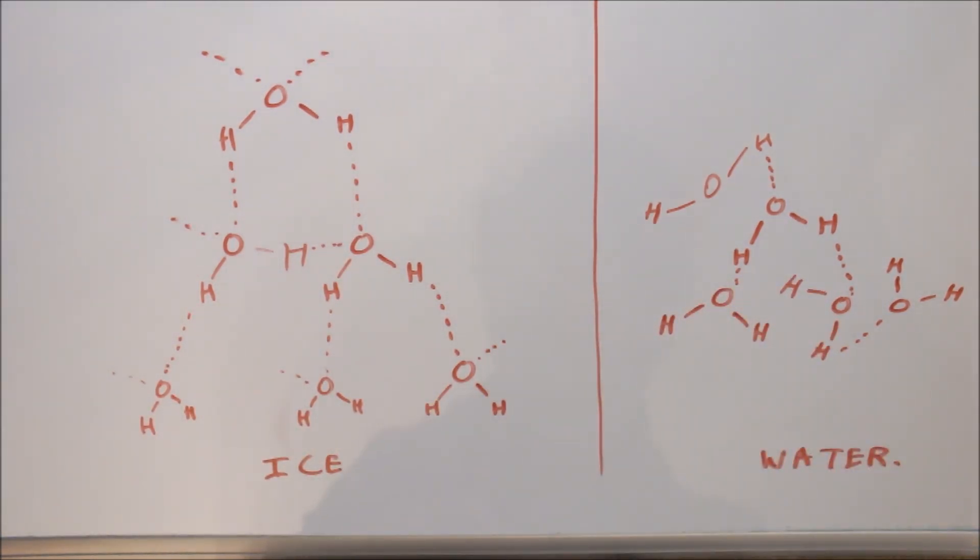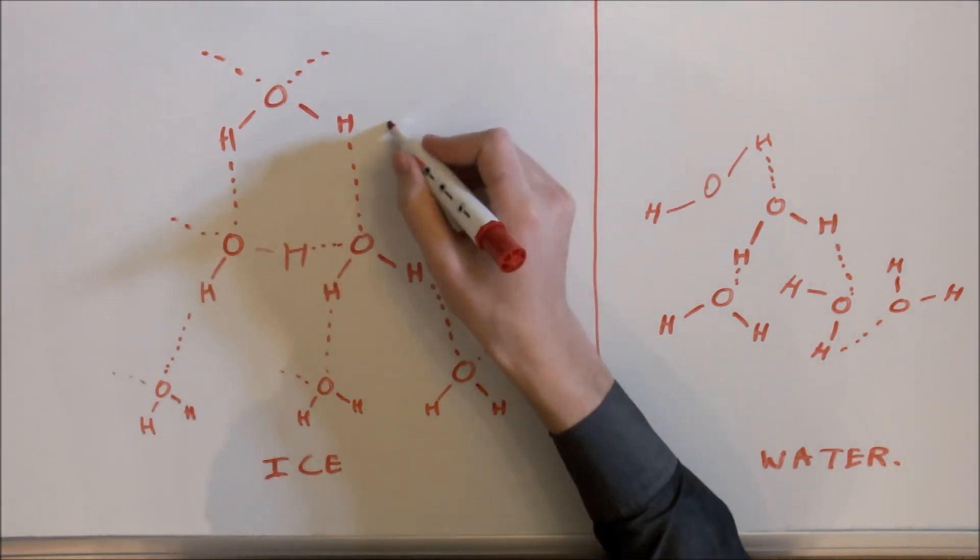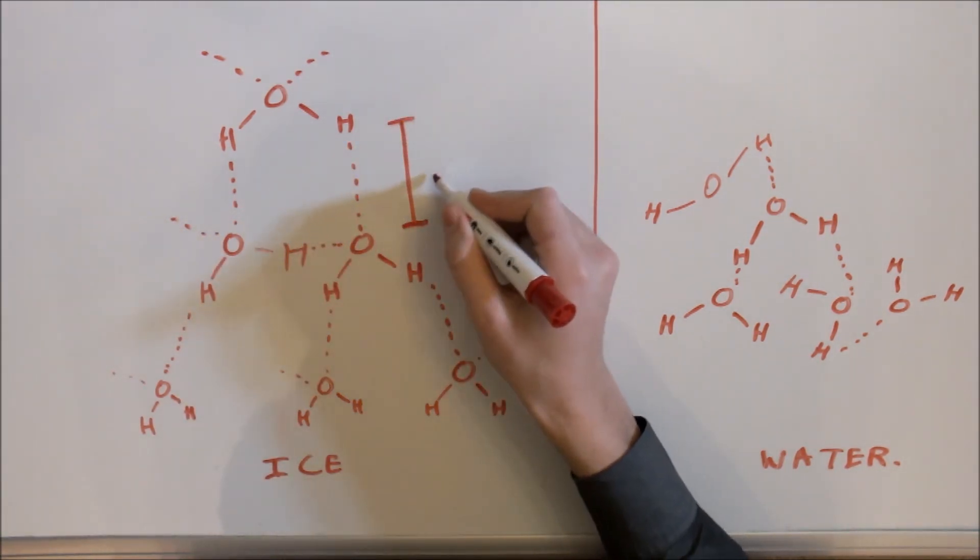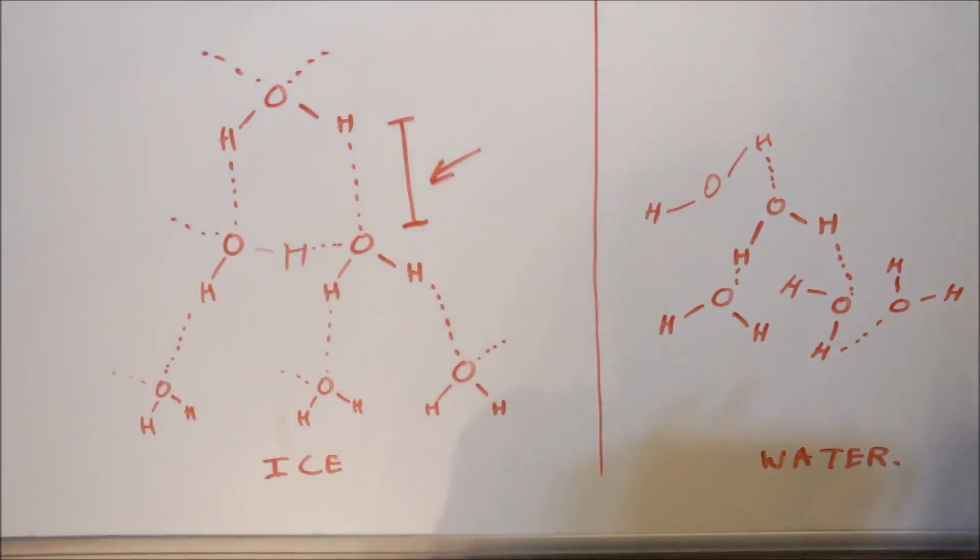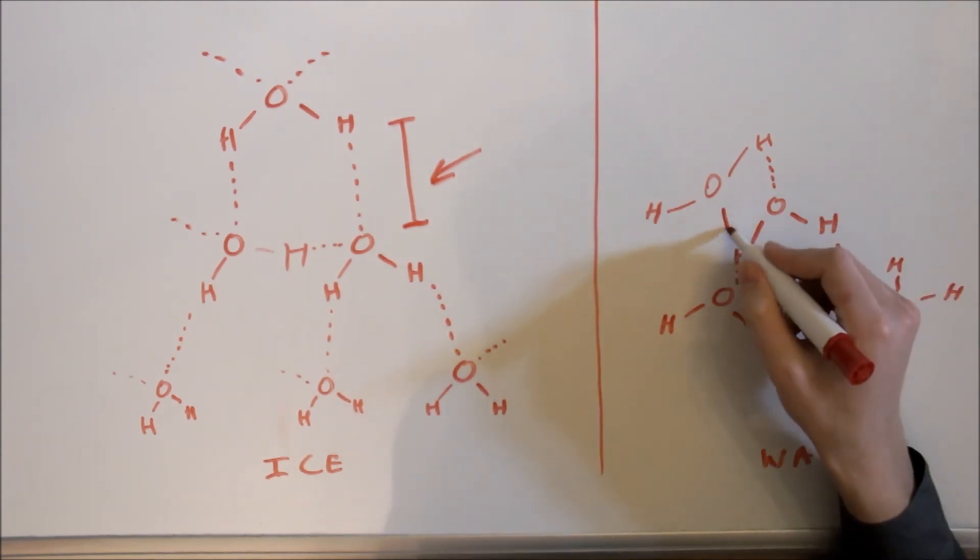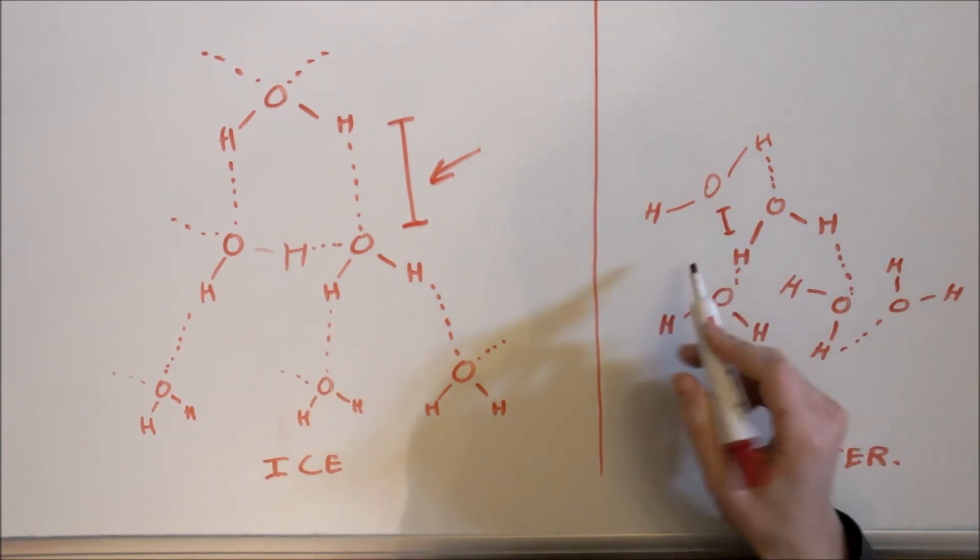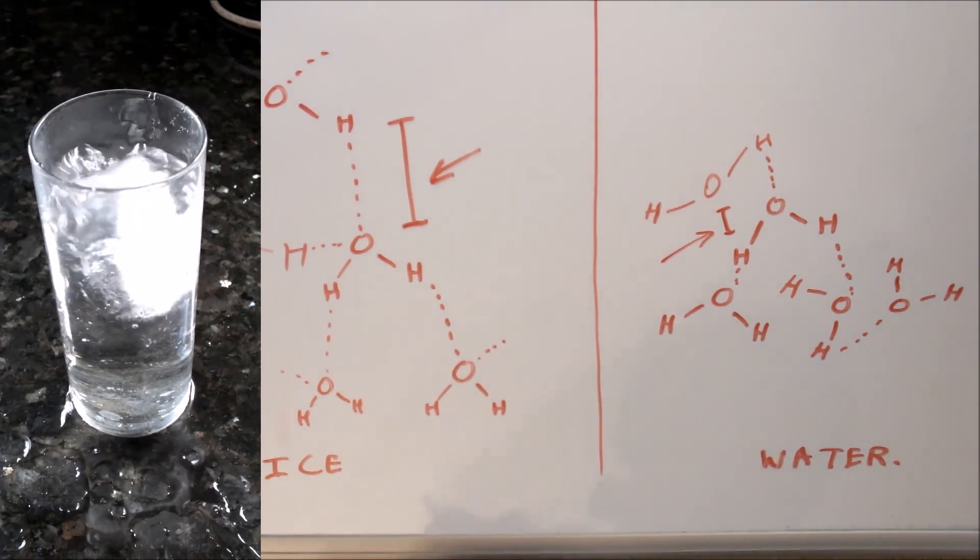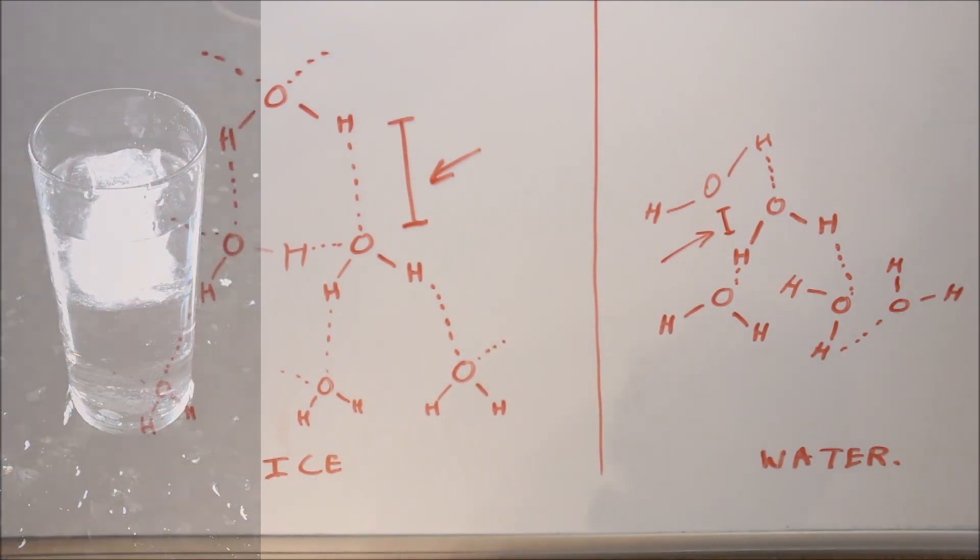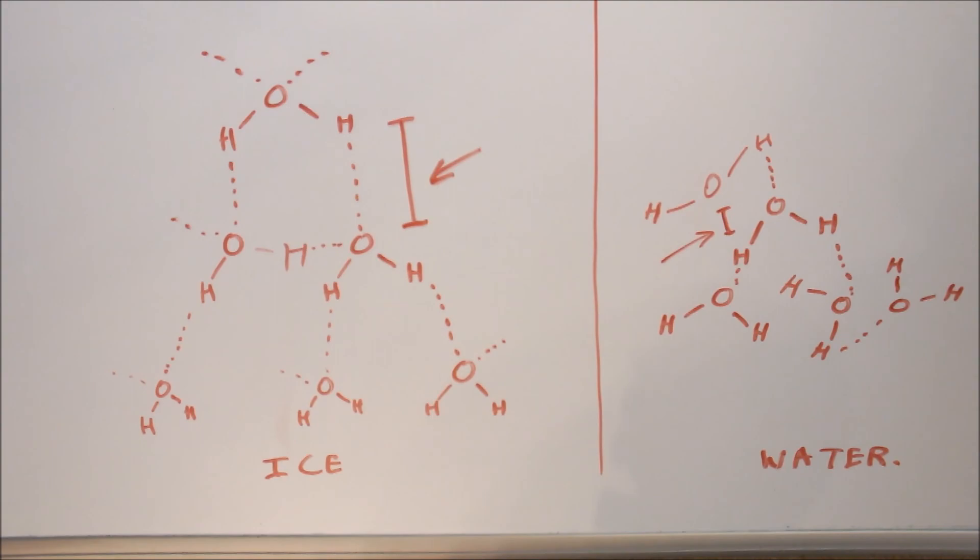This results in the water molecules being further apart from each other due to the regular structure. There is more space in between water molecules, resulting in a lower density. This is proven by ice floating on top of water, which preserves life underneath seas.